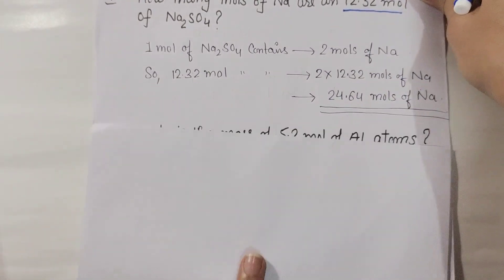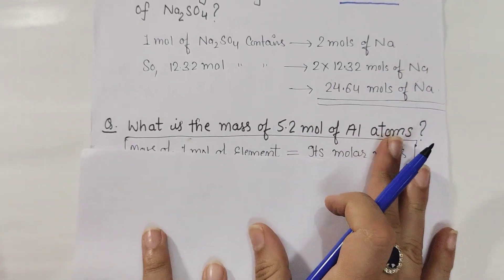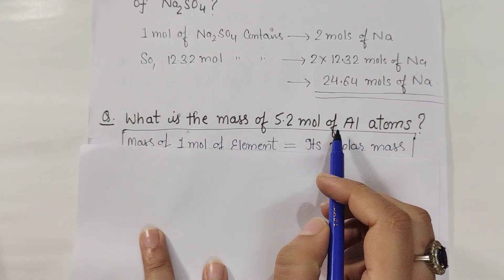Here comes the second question: What is the mass of 5.2 mole of aluminum atoms?